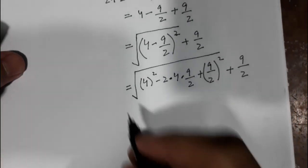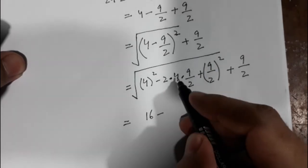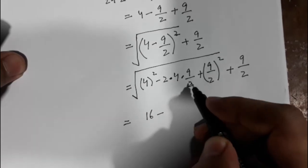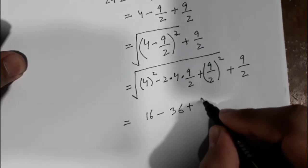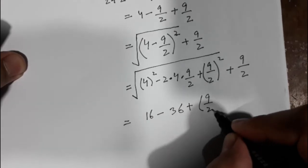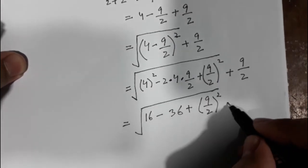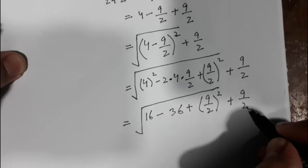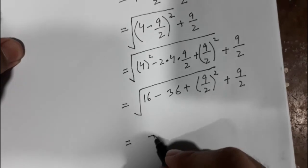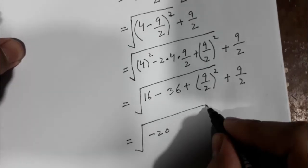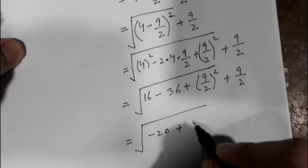Now calculate this: it is equal to 16 minus 4 into 9 divided by 2, which is 36, plus 9 divided by 2 whole square — this is under square root — plus 9 divided by 2. So this is 16 minus 36, which is minus 20, plus 9 divided by 2.